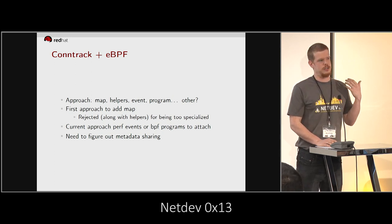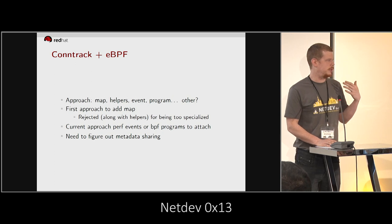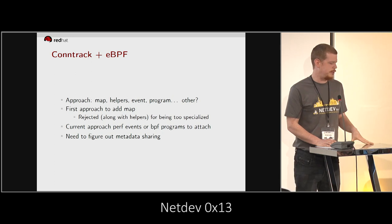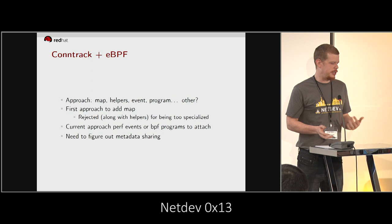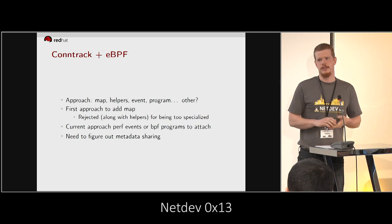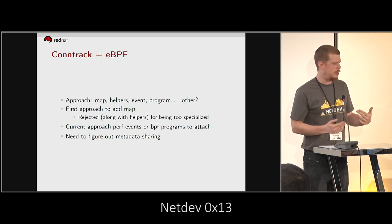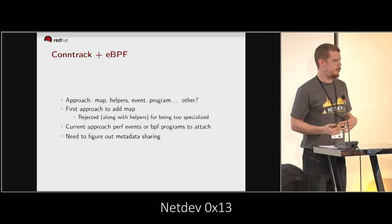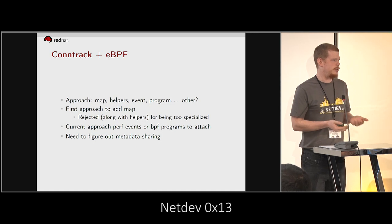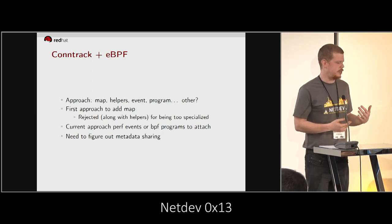Then a user could just register for a perf event or attach a BPF program, get these events as they come along, and populate their own maps and push it that way. I still haven't figured out the best way of doing this metadata sharing — the protocol information like window offsets and that kind of stuff that the core stack needs. One of the challenges with offloading connections this way is that if there's an exception and a packet does have to go back through the host, the host doesn't have any more accurate information about it because it's been offloaded and the host has been bypassed. So we need to figure out a way to share that metadata.